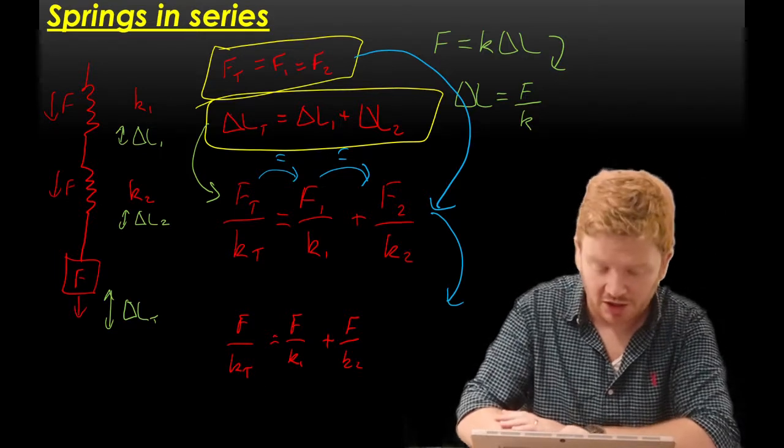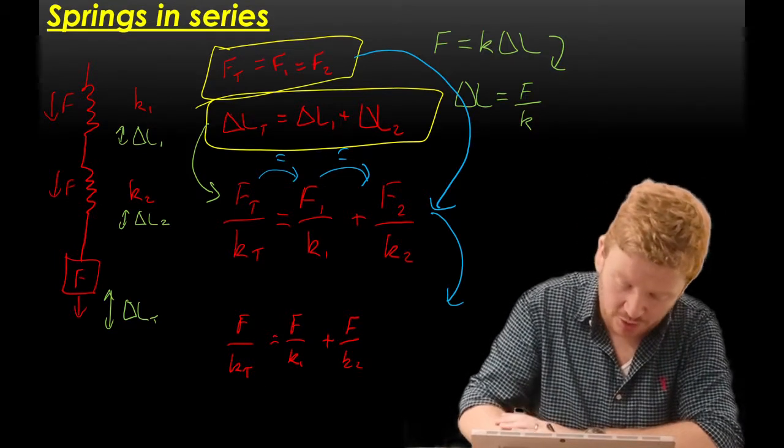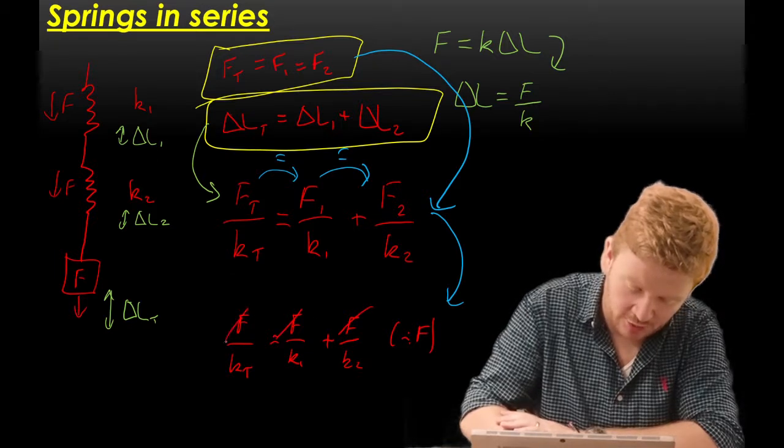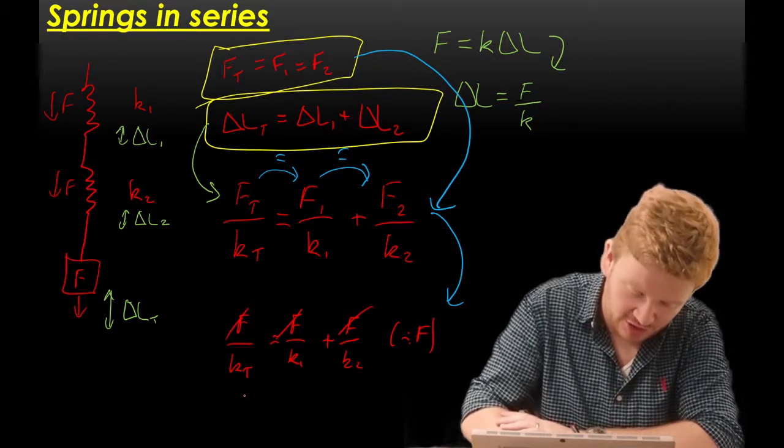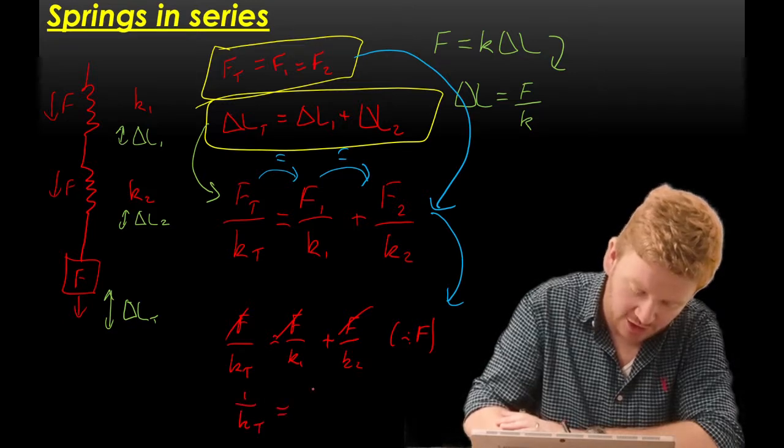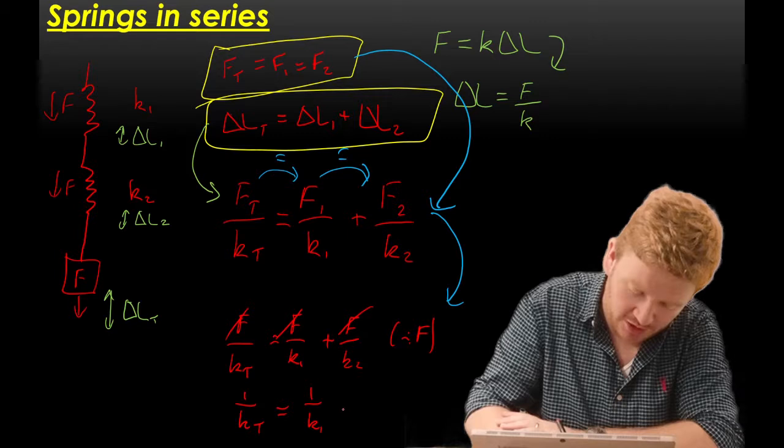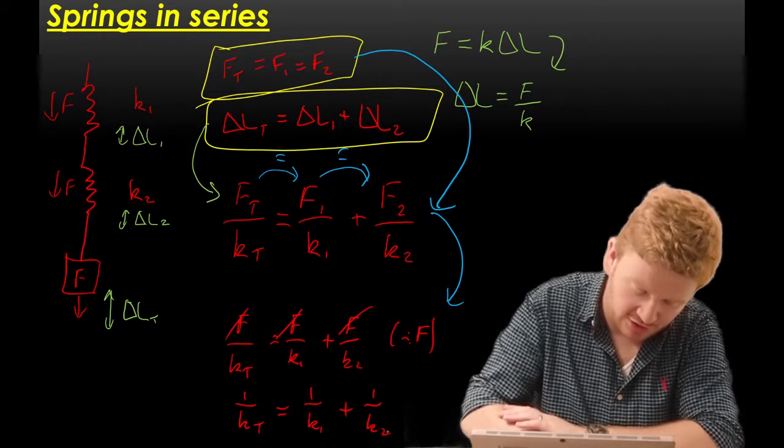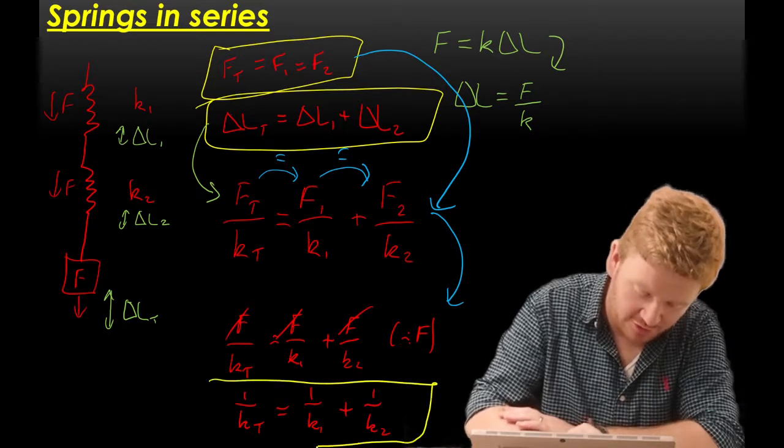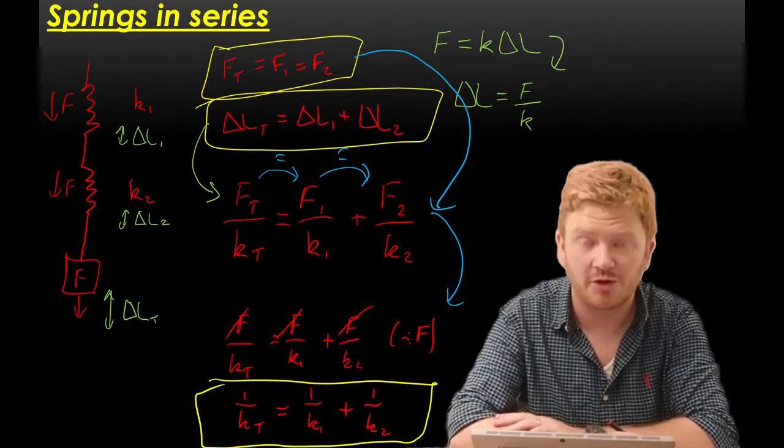And because these forces are identical, what I can do is divide both sides by F and just cancel it out of my equation. And that yields the equation 1 over kt is equal to 1 over k1 plus 1 over k2. And there we go. Relatively simply, we've verified that first spring equation.